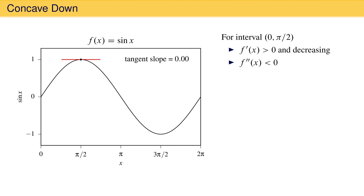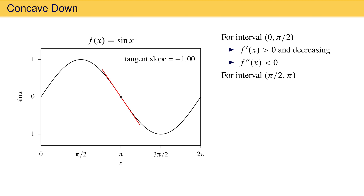Beyond x equal pi over 2, the first derivative gets even smaller, becoming negative until finally, at x equal pi, the derivative reaches its smallest value. For the region pi over 2 to pi, the first derivative is always negative, and the rate of change of the first derivative is also negative because it decreases as x increases. This makes the second derivative negative in this region as well.